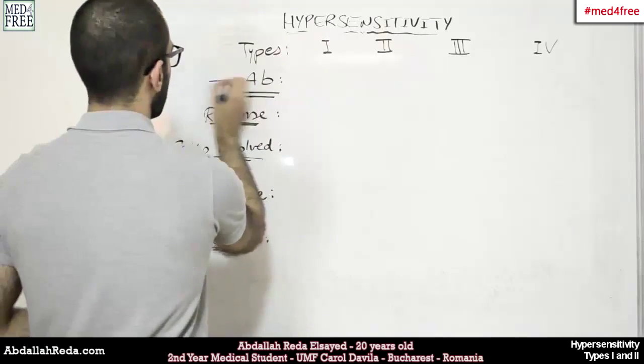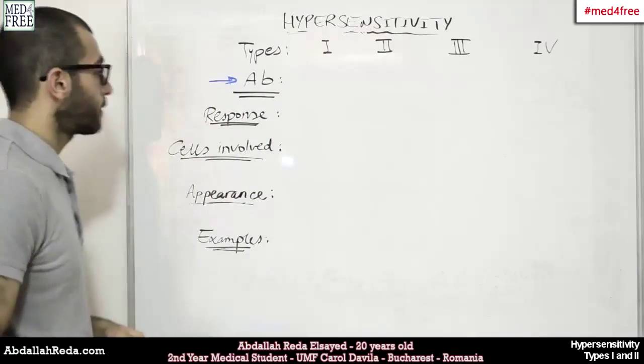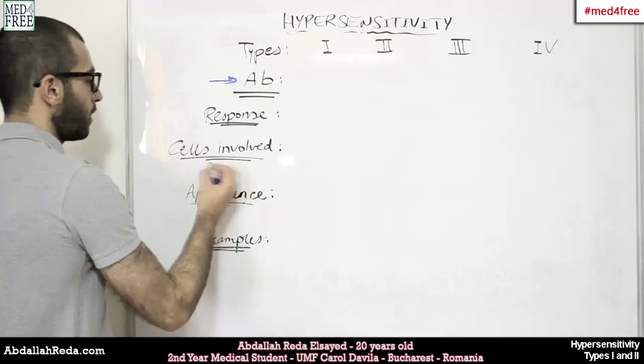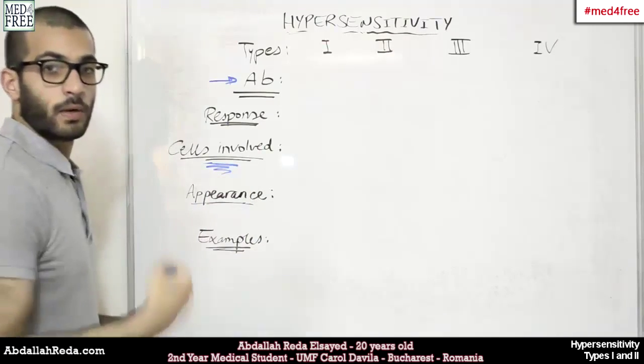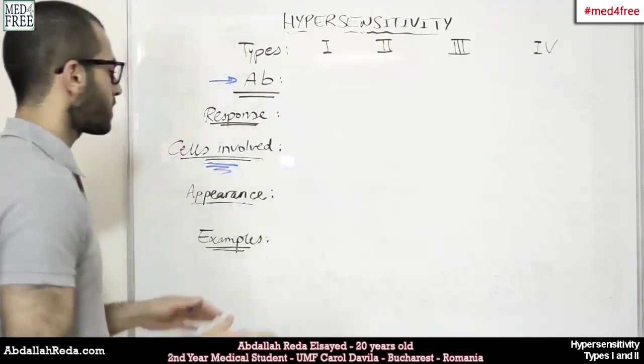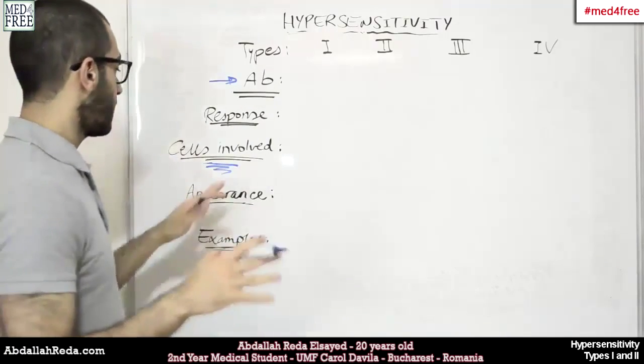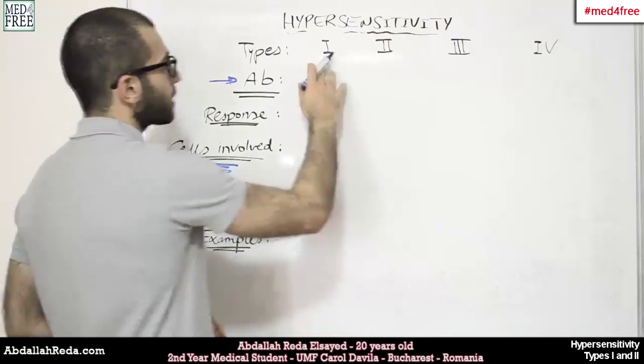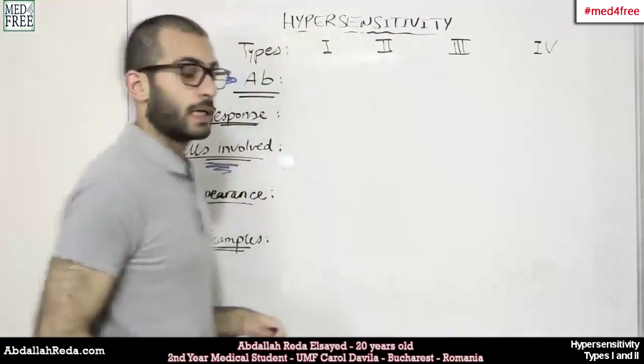First of all, it involves antibodies and, of course, antigens. And it involves other cells that are present in the immune system. And it has specific appearance or specific features. And as we'll see, it's classified into four types.